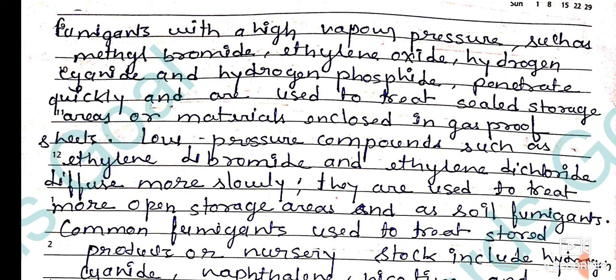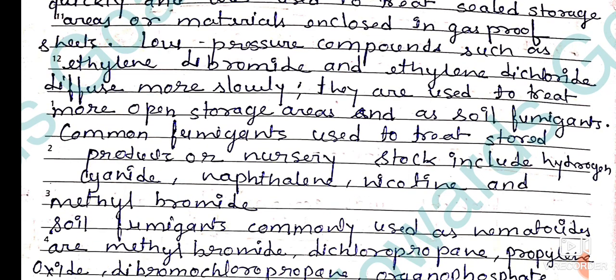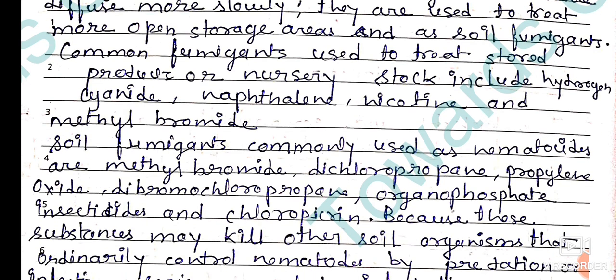ethylene oxide, hydrogen cyanide, and hydrogen phosphide, penetrate quickly and are used to treat sealed storage areas or materials enclosed in gas-proof covers. Low pressure compounds such as ethylene dibromide and ethylene dichloride diffuse more slowly and are used to treat more open storage areas and as soil fumigants.